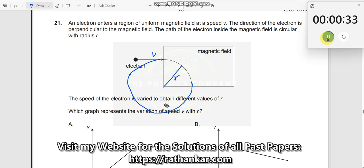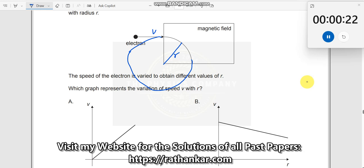The speed of the electron is varied. You are varying the speed of electron, there is a possibility that it can fall somewhere. Which graph represents the variation of v with r? We need to find out the relationship between v and r. So how do we do?